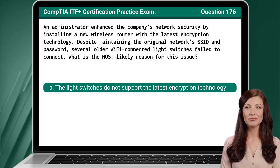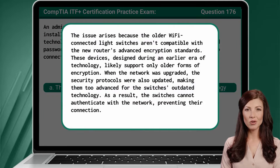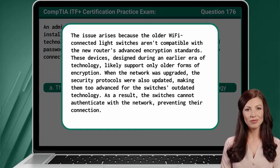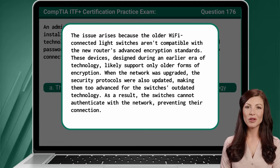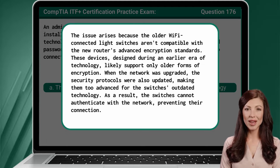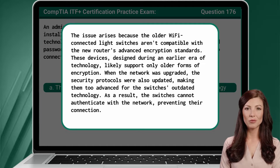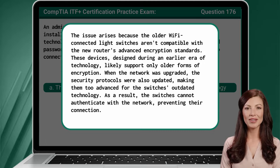The answer is A. The light switches do not support the latest encryption technology. The issue arises because the older Wi-Fi-connected light switches aren't compatible with the new router's advanced encryption standards. These devices, designed during an earlier era of technology, likely support only older forms of encryption. When the network was upgraded, the security protocols were also updated, making them too advanced for the switches' outdated technology. As a result, the switches cannot authenticate with the network, preventing their connection.